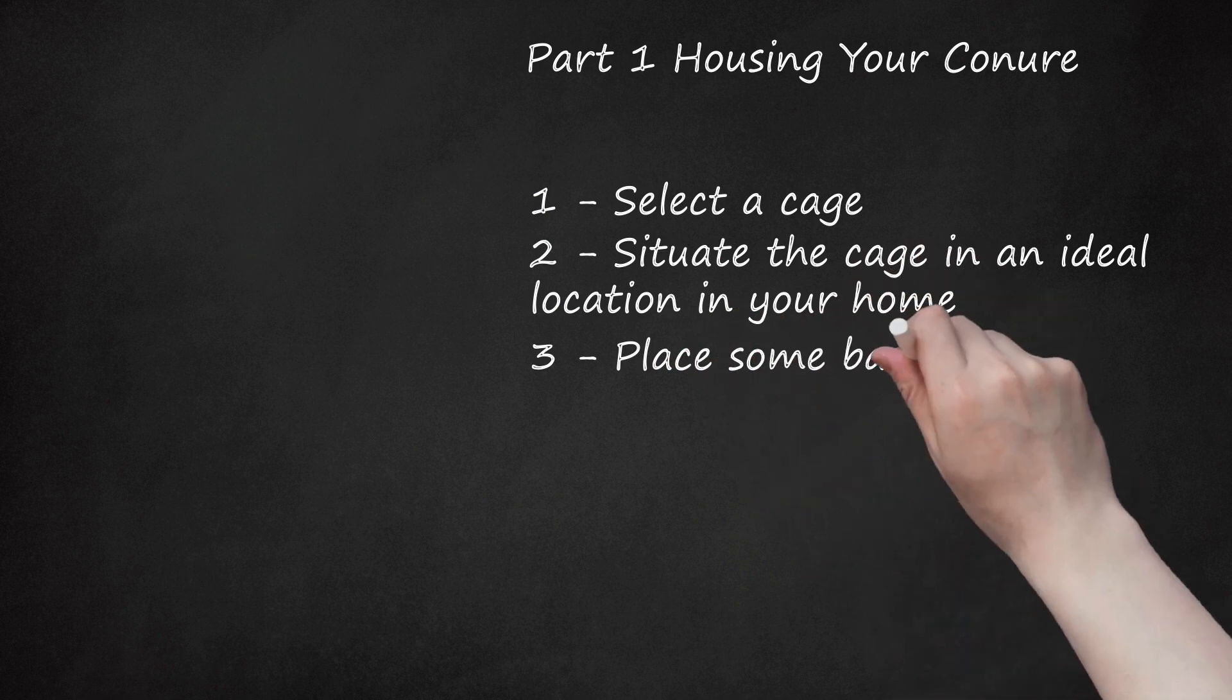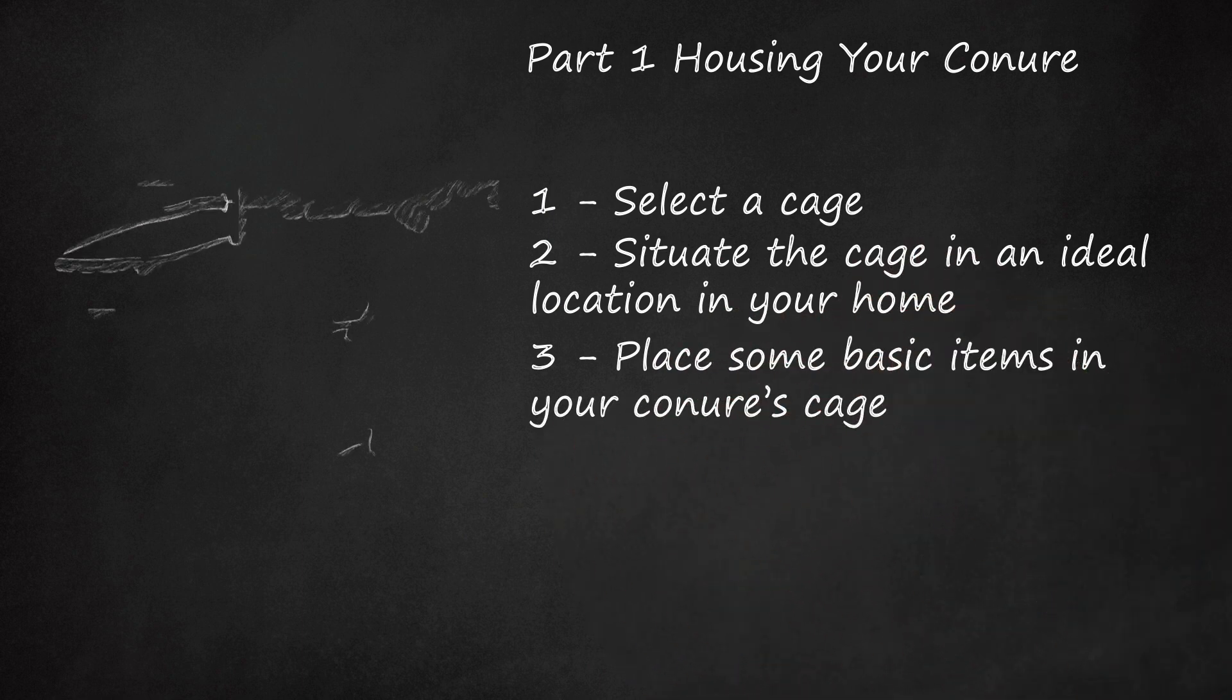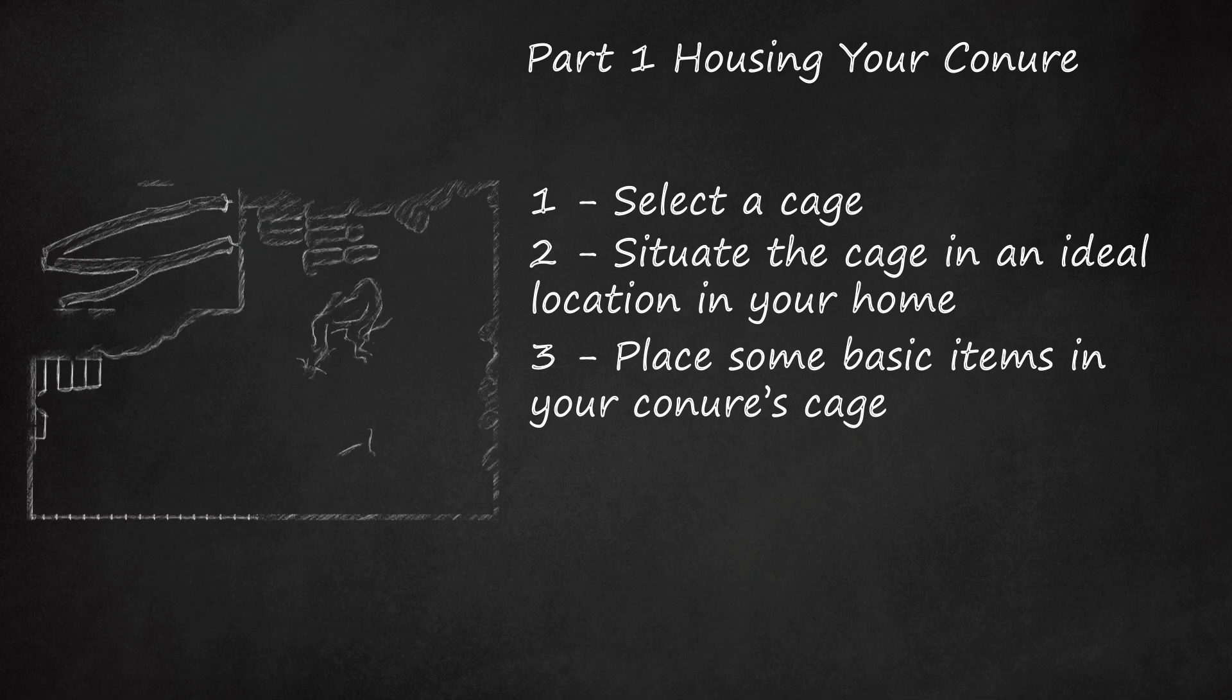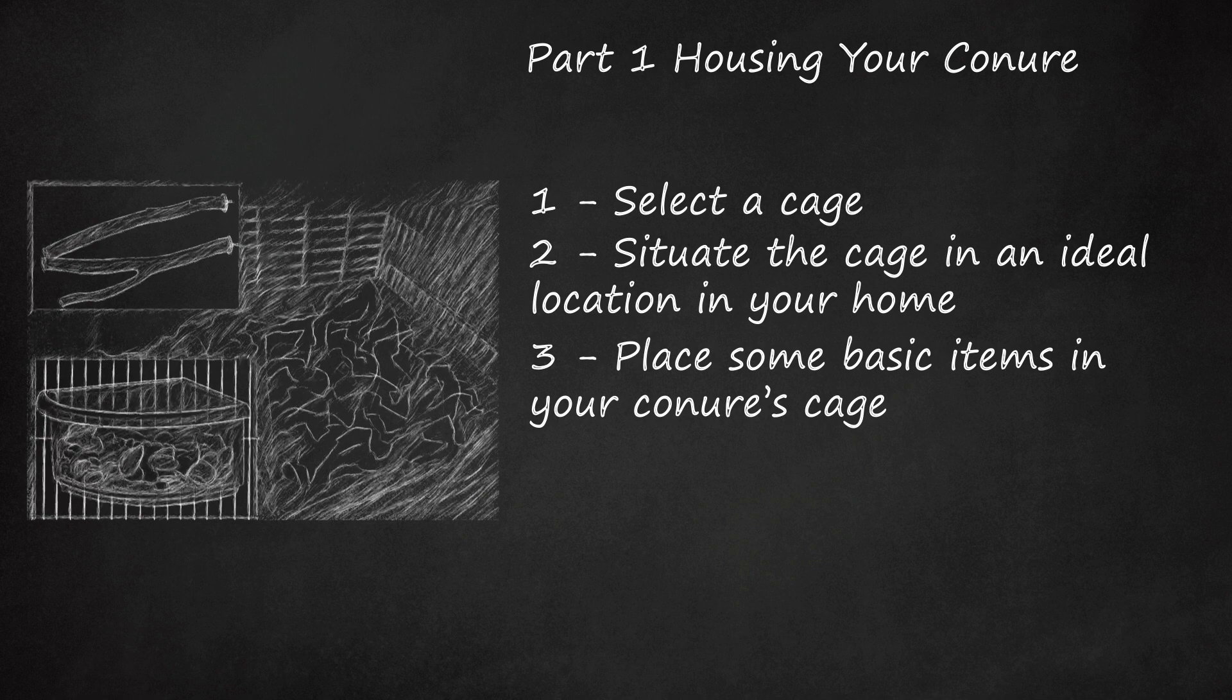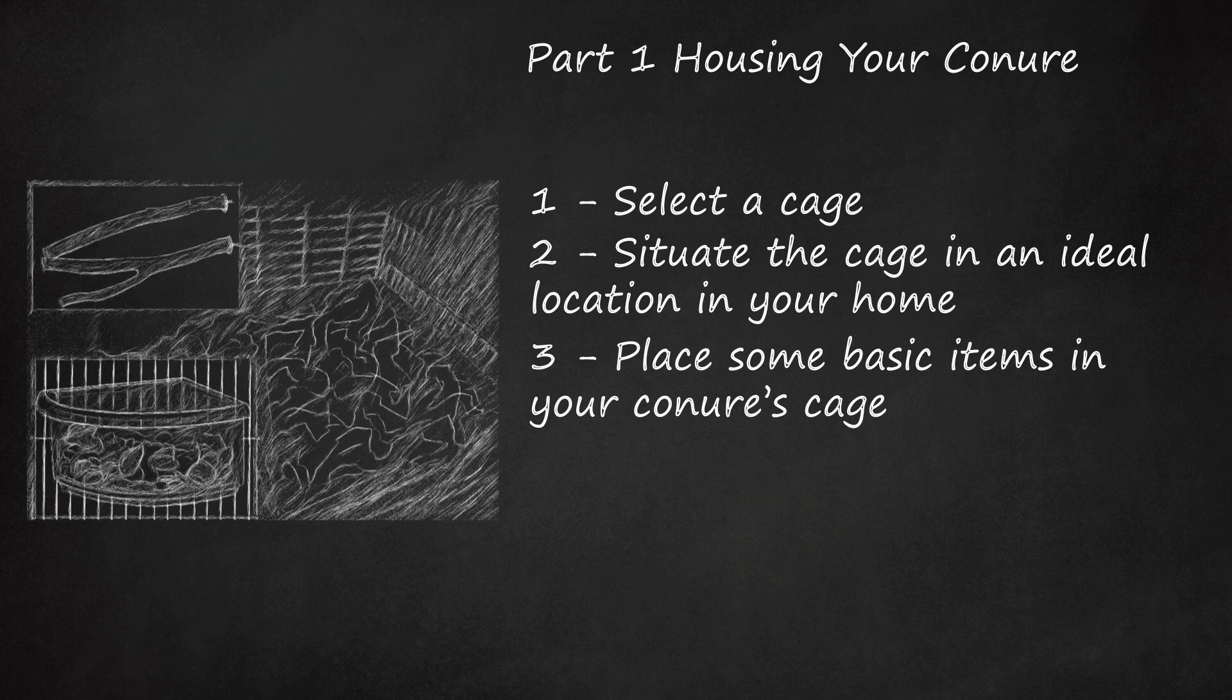Place some basic items in your conure's cage. Perches are an essential item in any bird's cage. For your conure, choose at least two perches that are 1/2 to 5/8 inches (about 1.5 centimeters) in diameter. Position the perches such that your conure's tail feathers will not rub against the cage bars when she sits on the perches. Place one perch close to your conure's food and water dishes. Consider using perches that have various sizes, shapes, and textures. This will help keep your conure's feet healthy and strong. Place two to three food and water dishes in her cage. One dish would be for water and one or two would be for food.